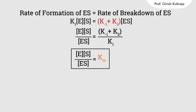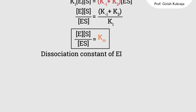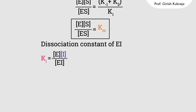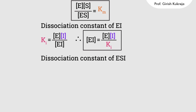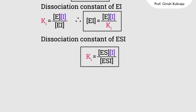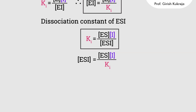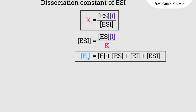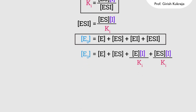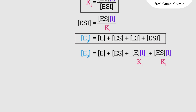Defining Km from this, we have Km = E × S / ES. The dissociation constant for EI is given as Ki = E × I / EI, from which EI = E × I / Ki. The dissociation constant for ESI is Ki = ES × I / ESI, from which ESI = ES × I / Ki. The total enzyme E0 = E + ES + EI + ESI, which equals E + ES + (E × I / Ki) + (ES × I / Ki).